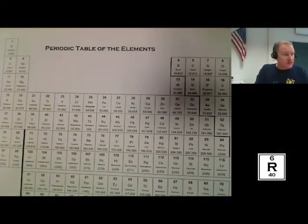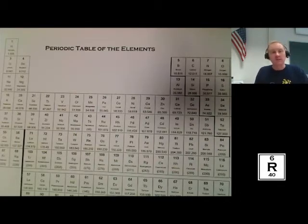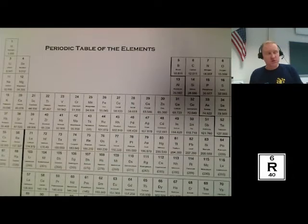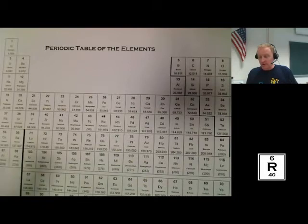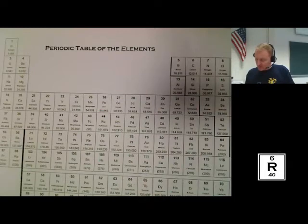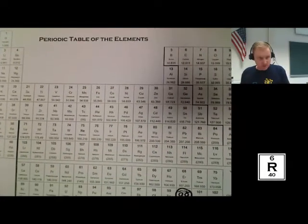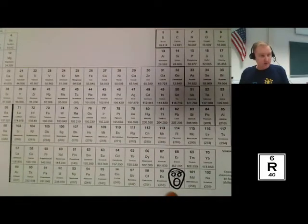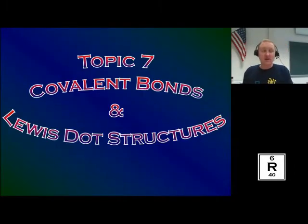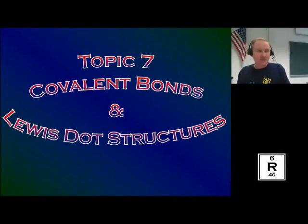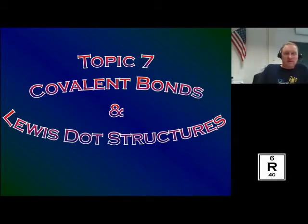Hey guys, Mr. Rast here, and we're going to be talking today about topic 7, which is covalent bonds and Lewis dot structures. Before we start, I just thought it's interesting to look at the periodic table because there's so many interesting things in there. A lot of times we just kind of glance over real quick and don't really appreciate it. Okay, so we're going to be talking about topic 7, covalent bonds and Lewis dot structures. I'm Mr. Rast, and let's get started.